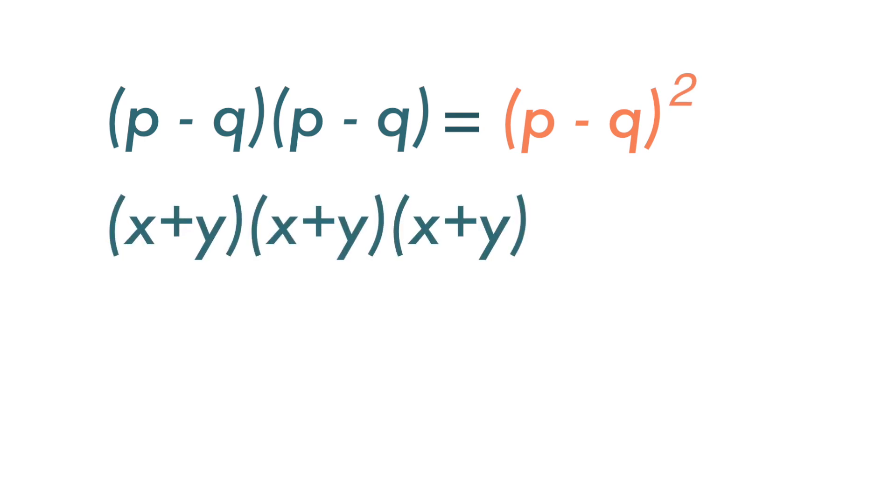If we have bracket p minus q times bracket p minus q, then we get bracket p minus q squared. If we have bracket x plus y times bracket x plus y times bracket x plus y, then we get bracket x plus y cubed.